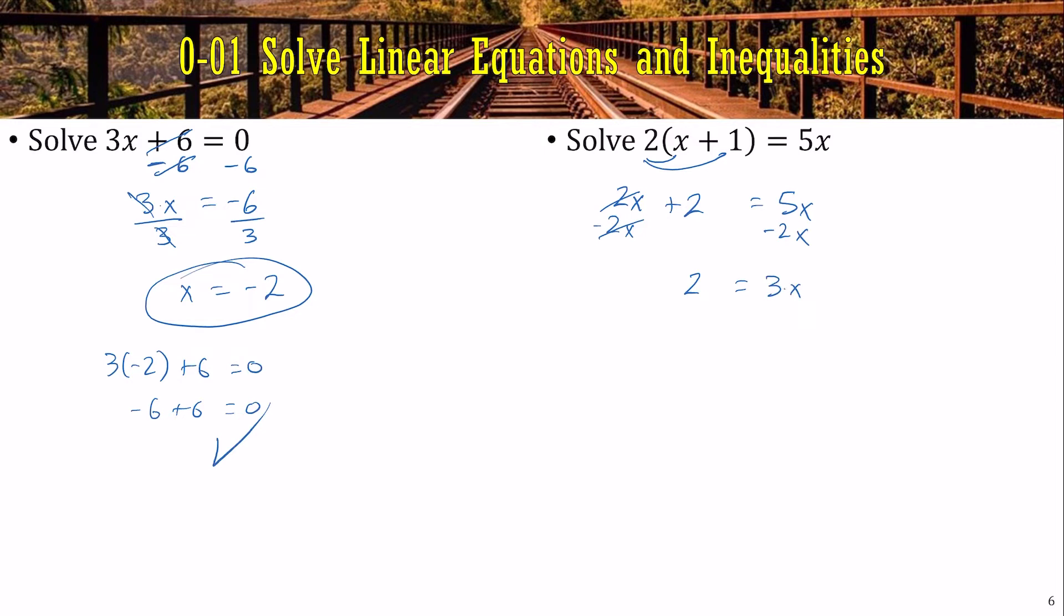So I have 2 equals 3x. And now it's 3 times x. So we'll divide by 3 to get it away from the x. And so it looks like x is 2 thirds, which again, we could check if we wanted to.